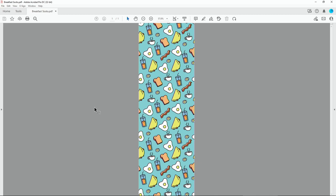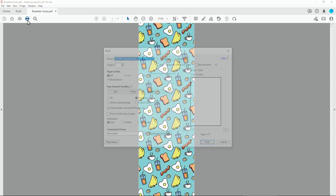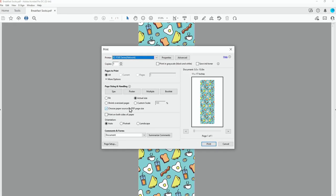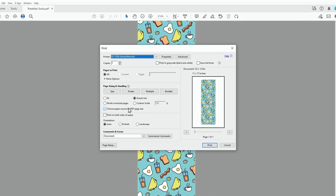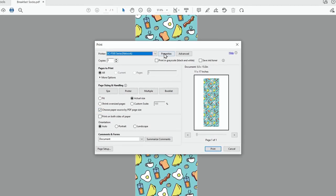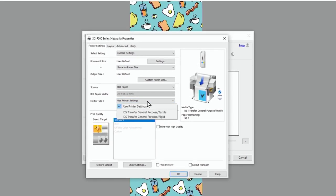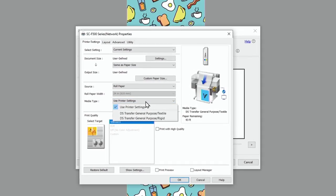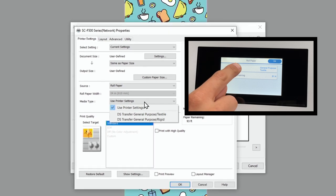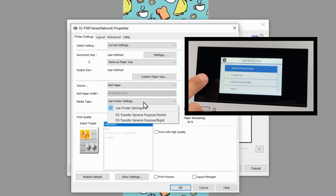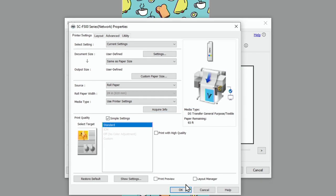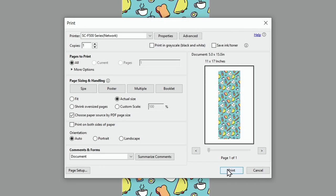Once you have the finished design for your socks, this is how you send them to the F570 printer. For Windows users, click the print button. Check choose paper source by PDF page size if it is not already checked. Choose properties. Select the media type setting that matches the paper you loaded. If you want to use paper settings that have been set in the printer's control panel, select use printer settings. Click OK, then click print to send the file to the printer.